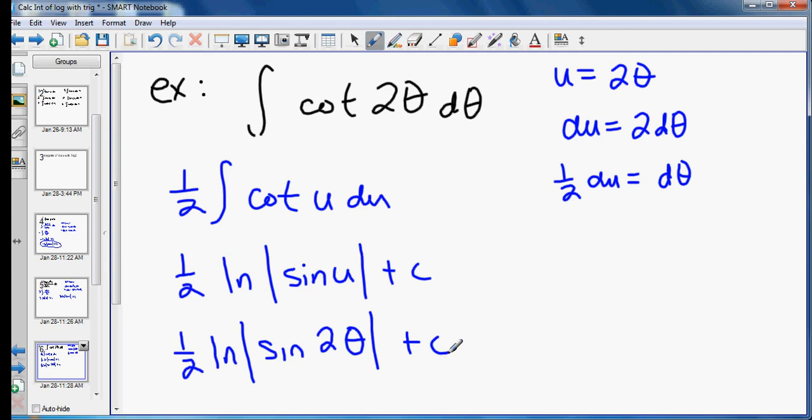Now there's two reasons I put this in the lesson with du over u, or the natural log rule. One is the rule for cotangent. The anti-derivative does have natural log. The other is you really could do this problem by rewriting this as cosine 2 theta over sine of 2 theta.